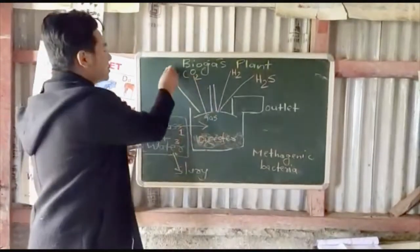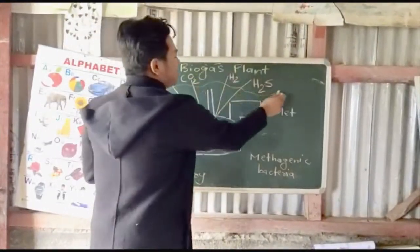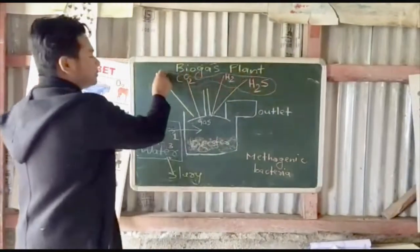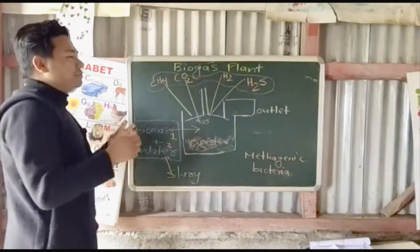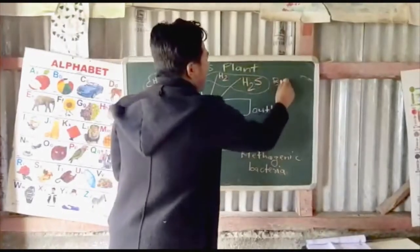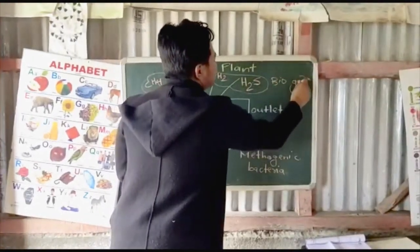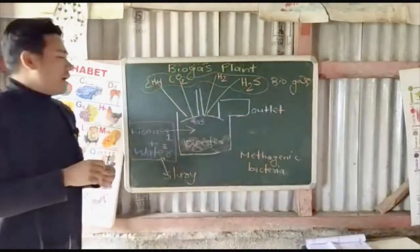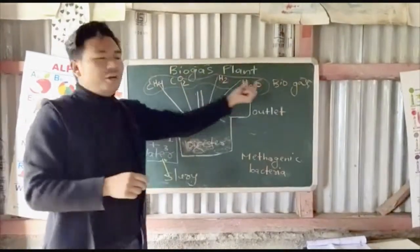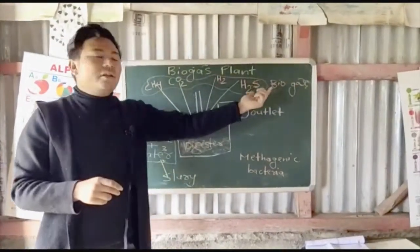This gas mixture — methane, carbon dioxide, hydrogen, and hydrogen sulfide — is what we call biogas. This biogas can be taken through a pipeline to the kitchen and used for cooking and other energy needs. It is very, very useful.